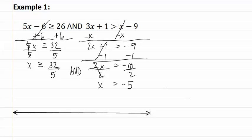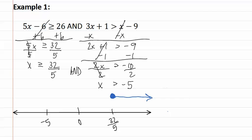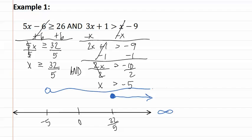We can now start drawing our graph, where we label all of the numbers. Let's start with x is greater than or equal to 32 fifths. Since it's greater than or equal to, it's a filled-in dot, and it goes towards the right because it's going towards positive infinity. Next, we have x is greater than negative five, so that is an open dot also going in the positive direction. And then we can only select the overlap, so essentially all we are selecting is the shorter of the two lines, which starts at 32 fifths and goes towards positive infinity.